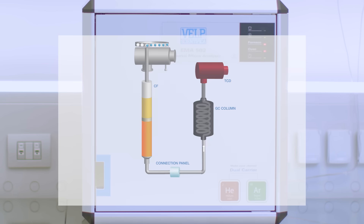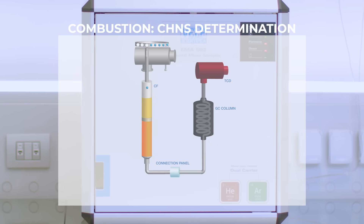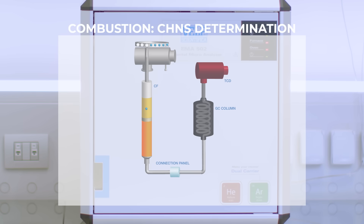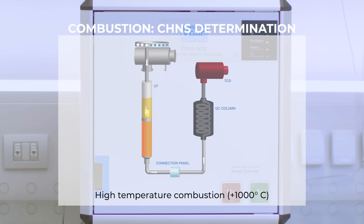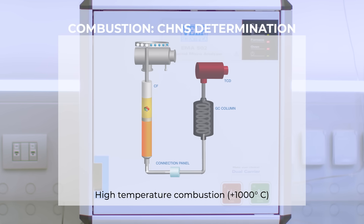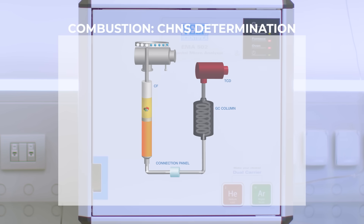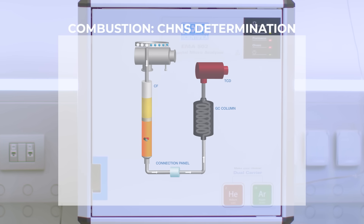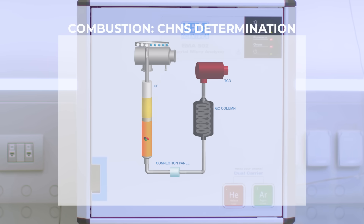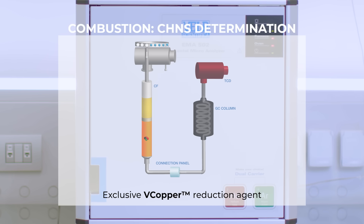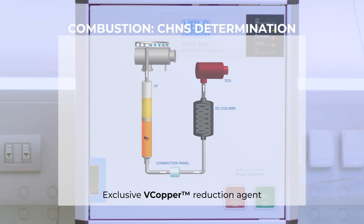The sample is purged with the carrier gas and drops down into the reactor. The CHNS analysis starts with the combustion of the sample at a temperature higher than 1000 degrees Celsius to obtain elemental compounds. During reduction, VELP V-copper reduces nitrogen dioxide to molecular nitrogen. VELP V-copper is a formulation of highly active copper powder placed in the lower part of the reactor.